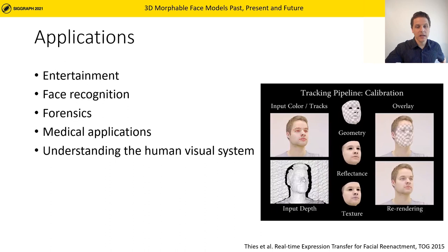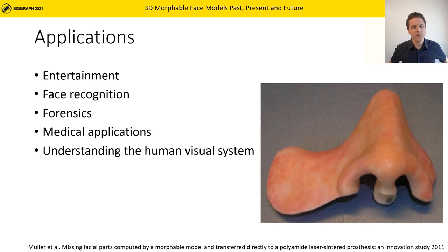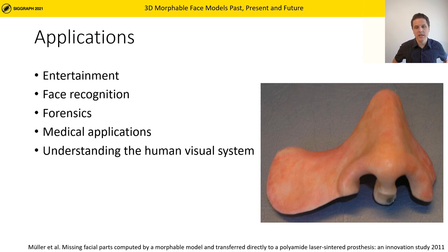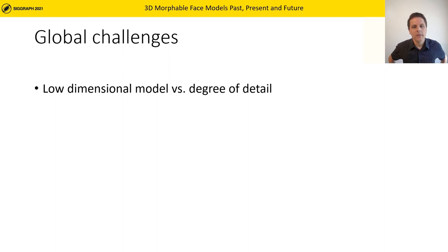In medical applications, 3D morphable models and statistical shape models are applied for facial reconstruction, as well as the early diagnosis of disorders like fetal alcohol syndrome. Morphable models were also applied to study the human brain, revealing interesting properties of human visual perception and how it relates to a simple face space spanned by a linear face model.